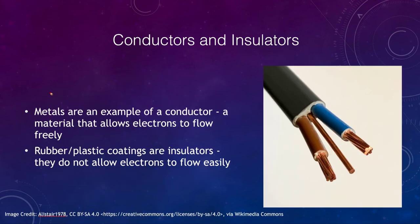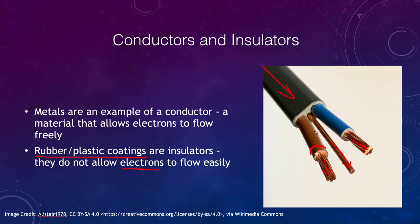Let's talk about conductors and insulators. We see an example of a wire here — the wire is shrouded by an insulator such as rubber and plastic coatings that do not allow electrons to flow easily. Electricity can travel freely through the copper wires on the inside, but does not travel well through the coating, keeping the wires separated. Metals like copper are conductors; plastics and rubber are very good insulators.